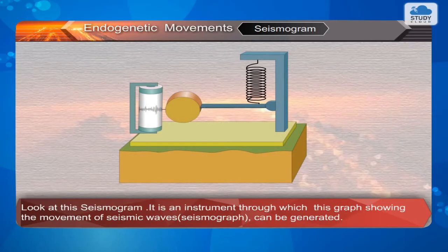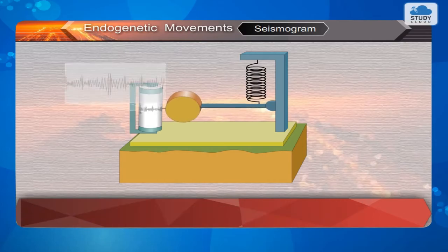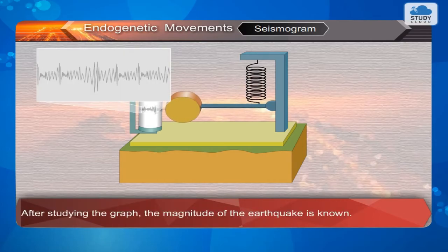Seismogram: Look at the seismogram. It is an instrument through which a graph showing the movement of seismic waves can be generated. After studying the graph, the magnitude of the earthquake is known.